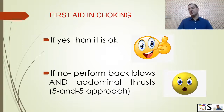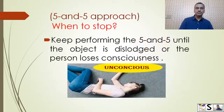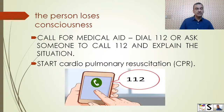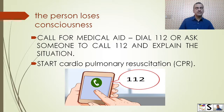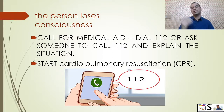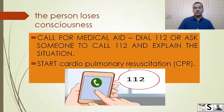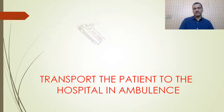Continue the five-and-five approach until the object comes out or the person loses consciousness. If the person becomes unconscious, shift your attention: call for medical help, dial 112, or ask someone to dial 112 and explain the situation. Then start CPR — Cardiopulmonary Resuscitation. Details of CPR can be found on my other lecture by clicking the I button for the BLS Basic Life Support and CPR training link. Then transfer the patient to hospital in an ambulance.